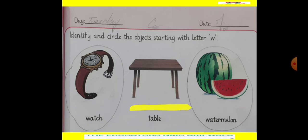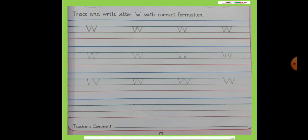Second object is table. The table does not start with Letter W. Third object is watermelon. It starts with Letter W.